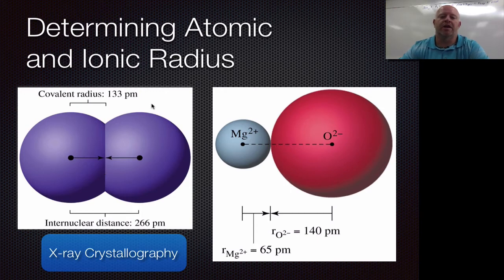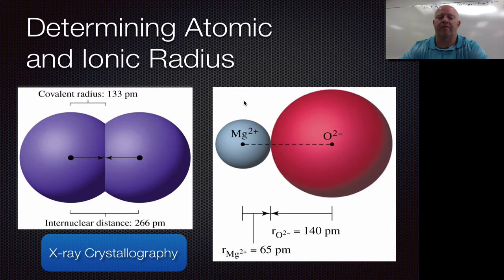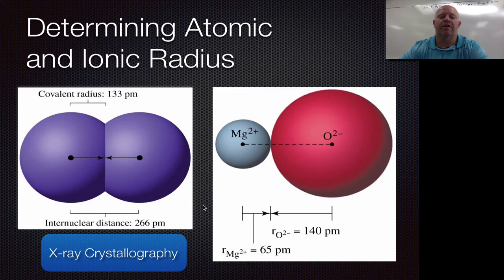So what we do instead is use a process called x-ray crystallography. It's basically a fancy version of what Rutherford did in the gold foil experiment, where we beam x-rays into different crystalline structures. Those rays bounce off and help us pinpoint the nuclei between different atoms. Whether with covalently bonded or ionically bonded materials, we can find the distance between two nuclei, and from that mathematically calculate the distance between the nucleus and the outer edge of the electron cloud.